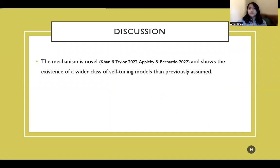So, what the main thing about this is that the mechanism is novel. It is different to the ones done in the original self tuning models, and it is different to the recently proposed well tempered models as well. This mechanism has been generalized and explained further in this paper by Appleby and Bernardo, which was released shortly after our paper. And it actually shows that there is an existence of a wider class of self tuning models than we had previously assumed.